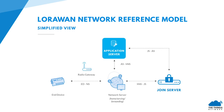LoRaWAN 1.1 back-end interfaces specify the network reference model, which gives a simple overview of the end device, the gateway communicating with the network server, the join server, and the application server. It's very important to see the difference between these components, because this is where and how the keys are exchanged between them.